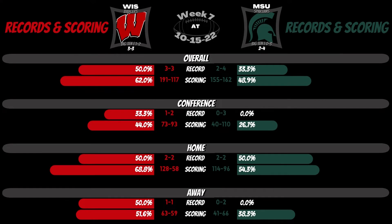65% of people are visual learners, so content is designed to allow all analytic skill levels the ability to decipher tons of data with haste. Here, butterfly charts show percentages for record and scoring amongst various game types.